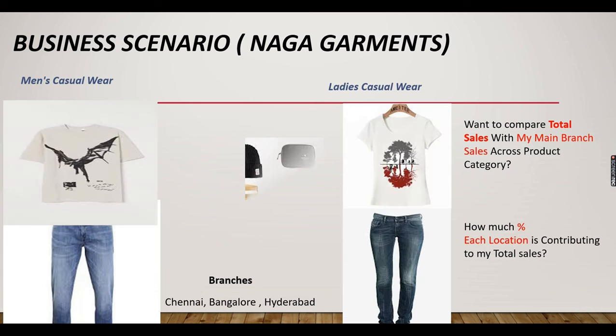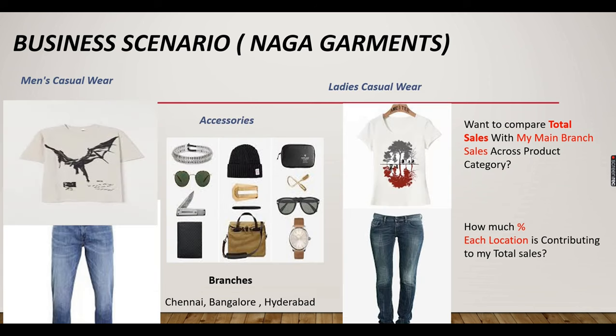Different business questions are answered using DAX or Power BI options. Today, the business owner has a question: he wants to compare total sales with his main branch sales across product categories. His total sales is 1 million, and he wants to know what his main branch Chennai sales contributed — maybe 0.3 or 0.4 million — and analyze this across different product categories.